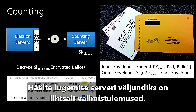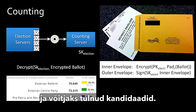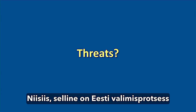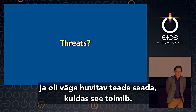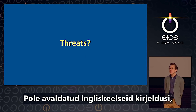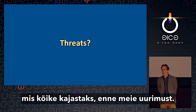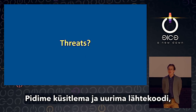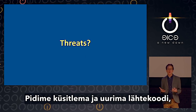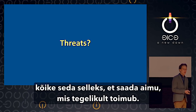The output of the counting server is simply the election results. They're added in with in-person votes and the winner is declared. That's the Estonian process — there were no published descriptions in English covering the entire thing prior to our study; we had to ask people and review the source code to get a good idea of what was really happening.